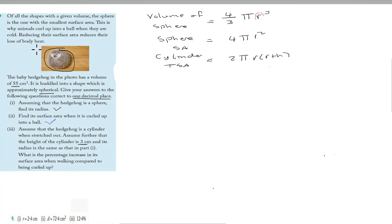Of all the shapes with a given volume, the sphere is the one with the smallest surface area. This is why animals curl up into balls when they are cold — reducing their surface area reduces the loss of body heat. When an animal is curled up, less of its body is exposed to the elements. The baby hedgehog in the photo has a volume of 55 cubic centimeters and is huddled into approximately a sphere. Give your answer correct to one decimal place.